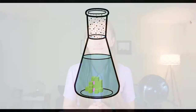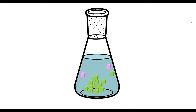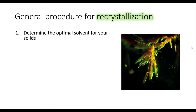Now let's take a look at how we would recrystallize compounds. In the process of recrystallization, we take an impure solid and we dissolve it in a minimal quantity of solvent, often with the help of heat. We then allow our compound to form a nice and neat crystal lattice from which the impurities would be excluded.